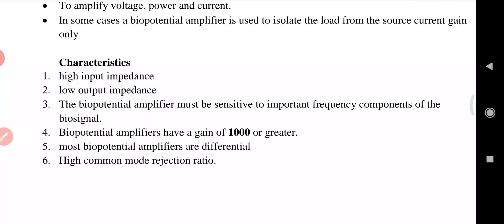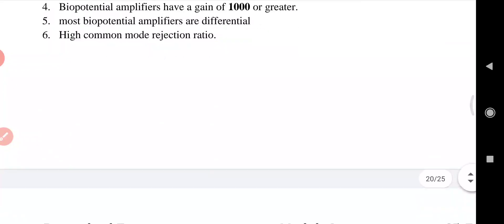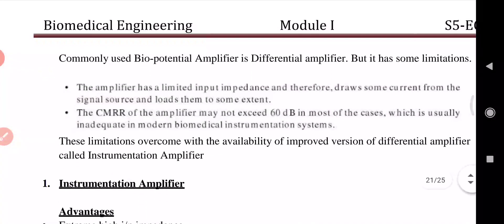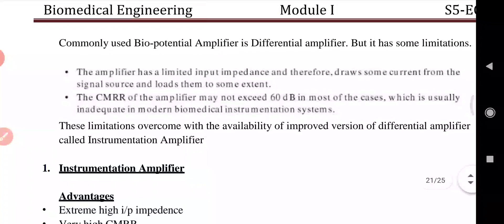CMRR is a number that describes how well an amplifier's input or output will reject noise, or how well balanced a balanced line is. That is the main function of CMRR, and in this class we have also discussed the instrumentation amplifier.